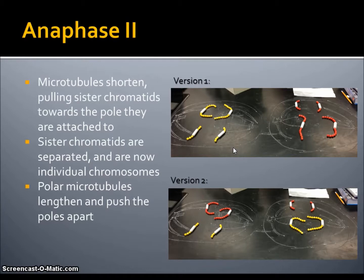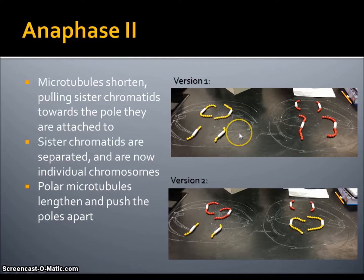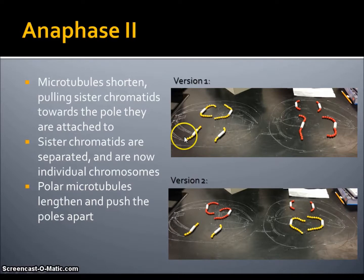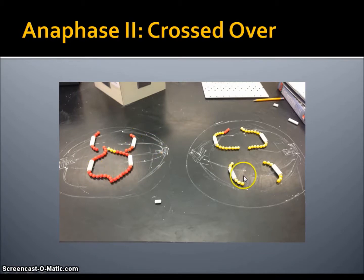In anaphase II, the microtubules begin to shorten, and as they shorten, they pull the sister chromatids towards their respective poles. In doing so, the sister chromatids, which were once attached, are now separated and have become individual chromosomes. While they are being pulled towards their respective poles, polar microtubules that stretch the length of the cell are again lengthening and elongating it, pushing the poles further apart. Here we can see our photo for our crossed-over pair — sister chromatids are being pulled apart, and the individual chromosomes are going towards their respective poles.